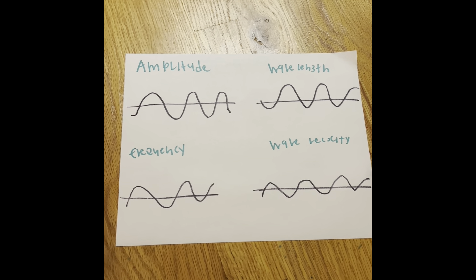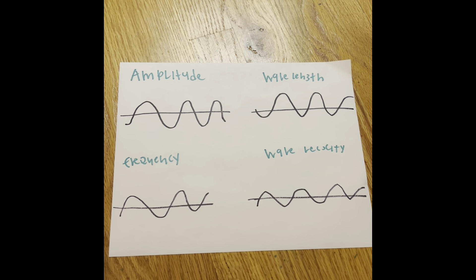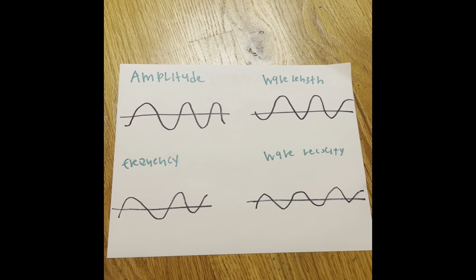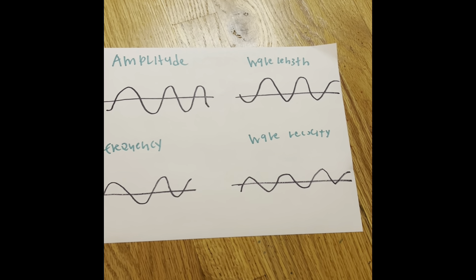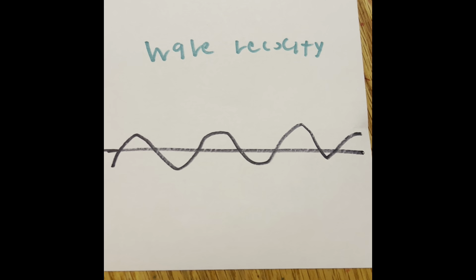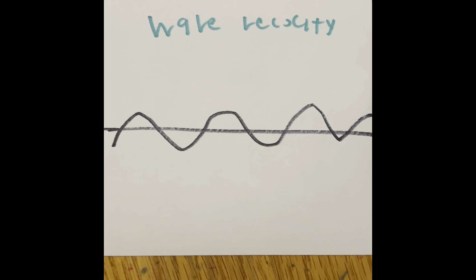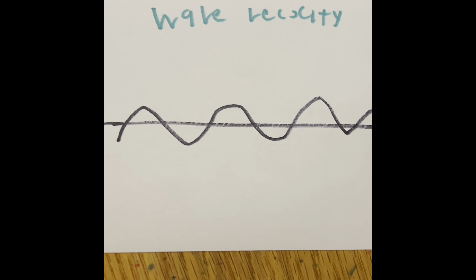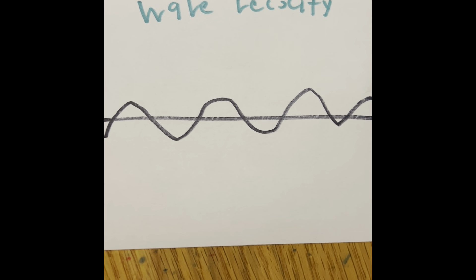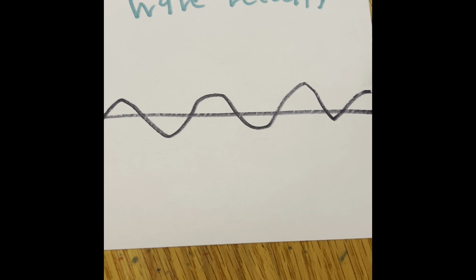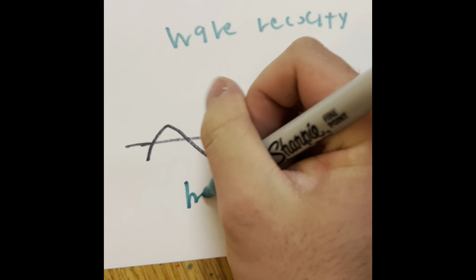So, in a normal wave where it goes up and down, there's the amplitude, the wavelength, the frequency, and the wave velocity. The wave velocity is basically how fast the wave is going from one point to another. We measure this in meters per second.